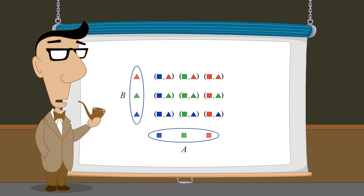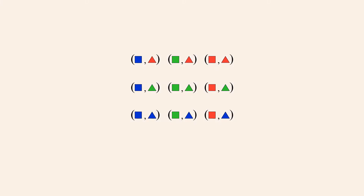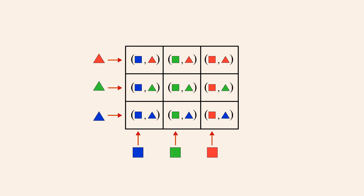The Cartesian product is written using a symbol which looks like a multiplication symbol. We can display the ordered pairs of this Cartesian product in a grid to form a simple two-dimensional coordinate system. By specifying the colors of each element, we can locate any horizontal and vertical position within the grid.